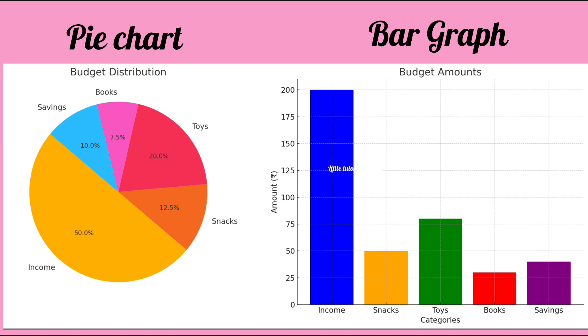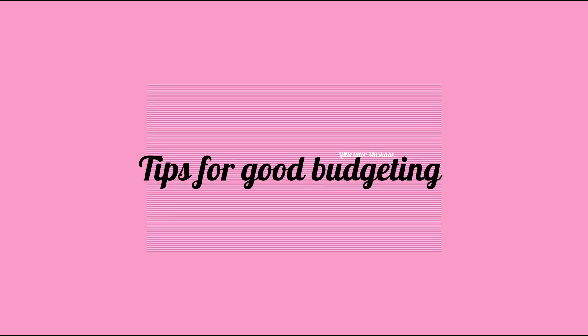Here are a few tips if you want to be a great budgeter. Number one: track your spending — write out everything you need to spend on. Two: prioritize needs over wants — try to spend on important things first. Three: save regularly — try to save a portion of your income once a month.